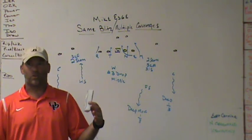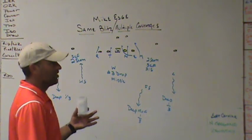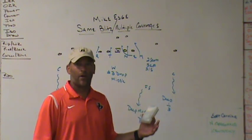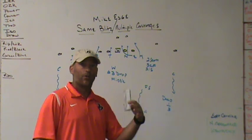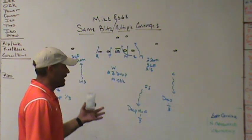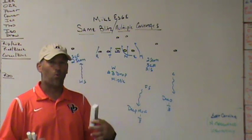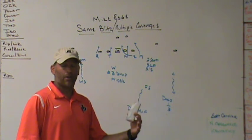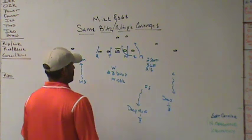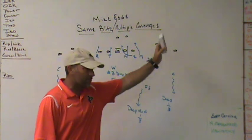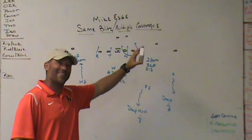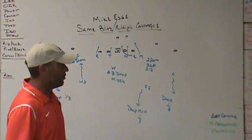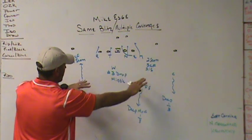If you want to pattern match it and two receivers go to the flat, you can play Rip Liz matched — match two to the flat with the seam-curl-flat player. There's not necessarily a right way or wrong way. It's whatever you think your kids can do best to take away what other teams try to do to you. If teams are going to abuse you to the flat because you just spot drop and don't match those routes, maybe you need to be able to match. As long as you teach it consistently and your kids understand the weaknesses of each concept, you're okay.